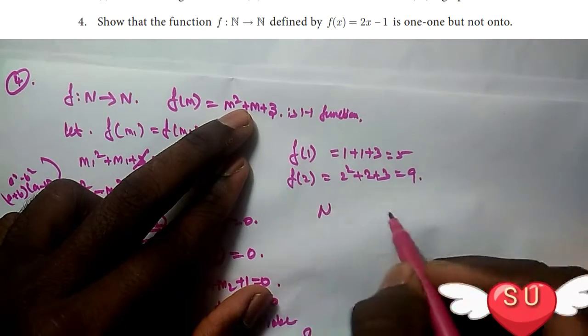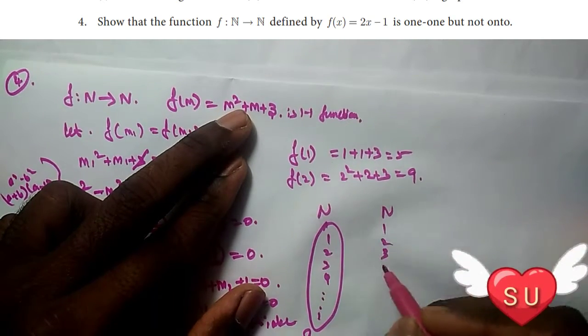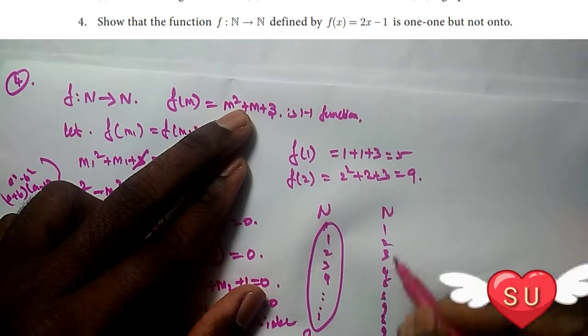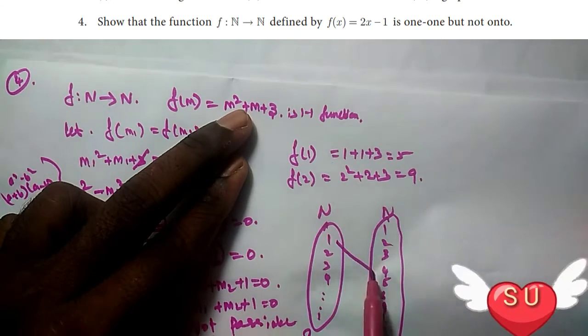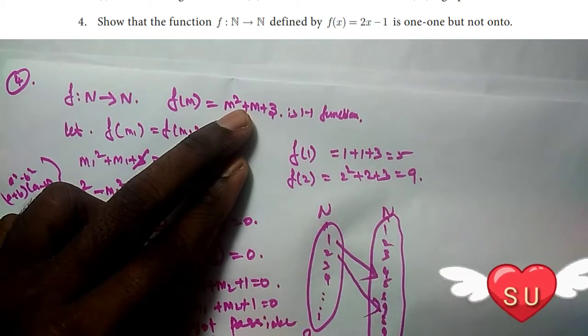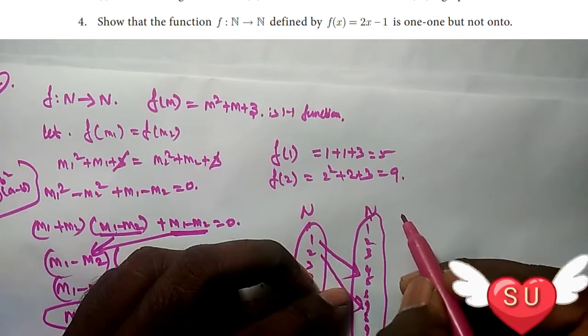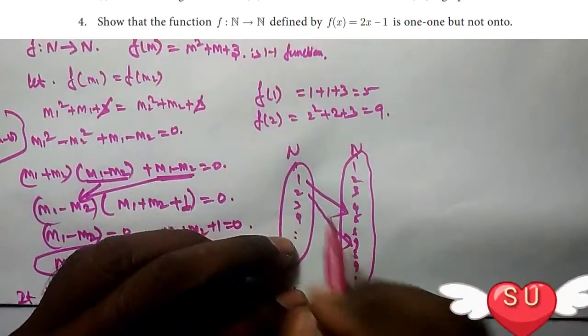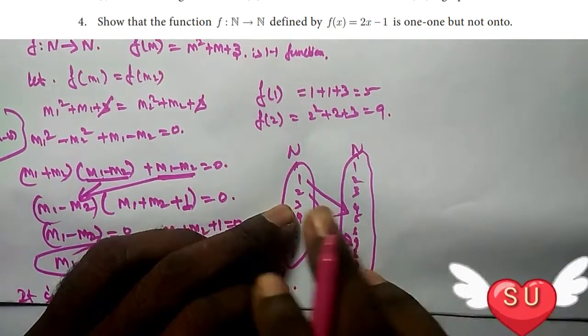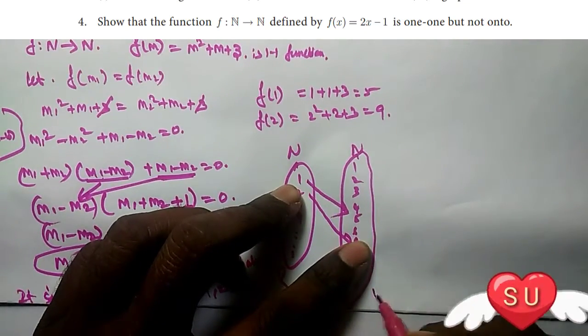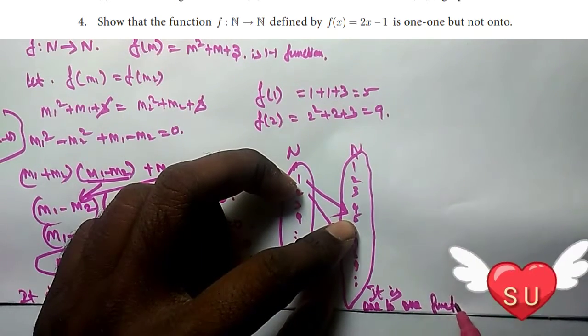We can see that different natural numbers produce different values. The domain values 1, 2, 3, 4 map to different image values 5, 9, and so on. Each different input gives a different output, which confirms this is a one-to-one function.